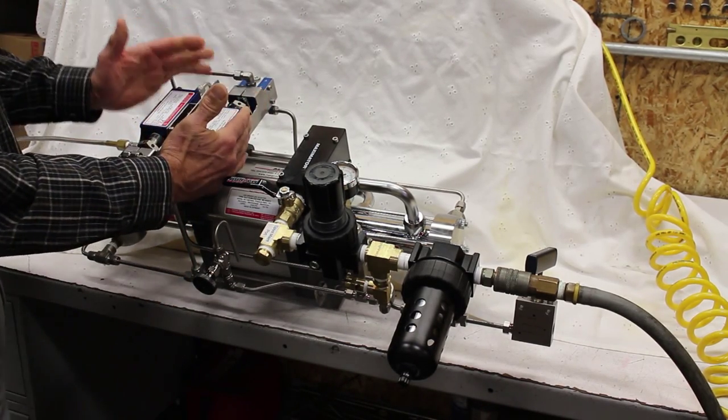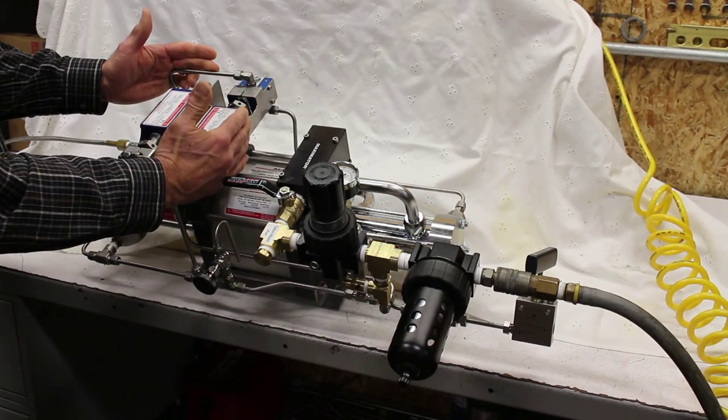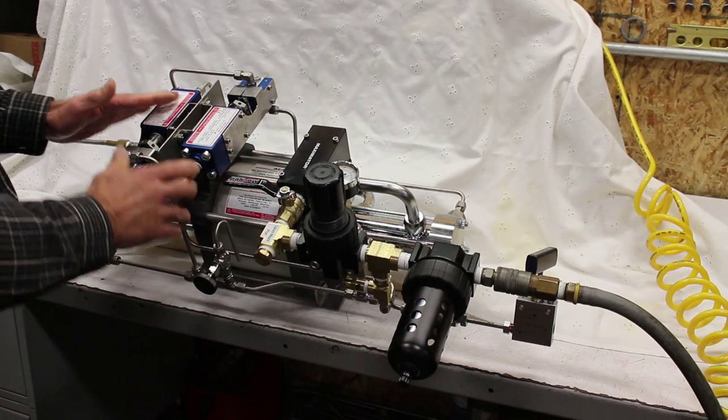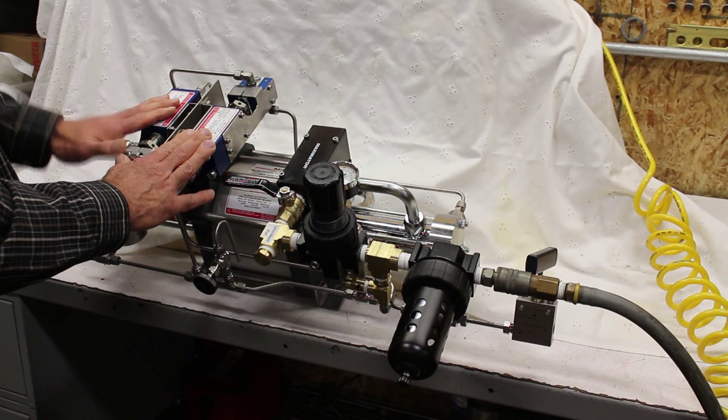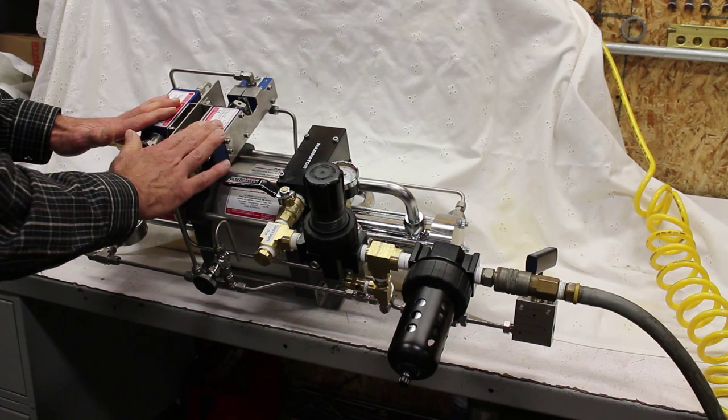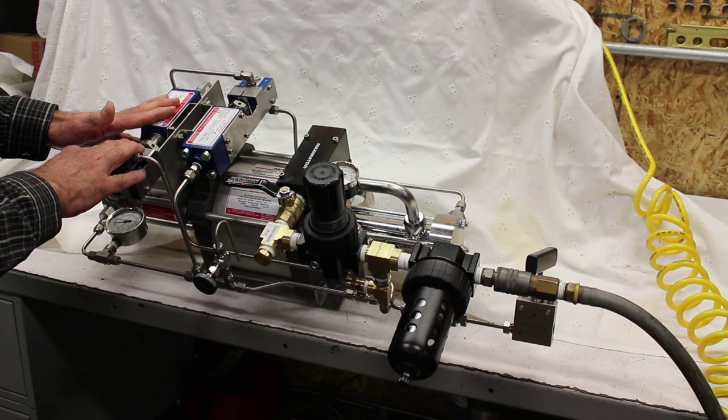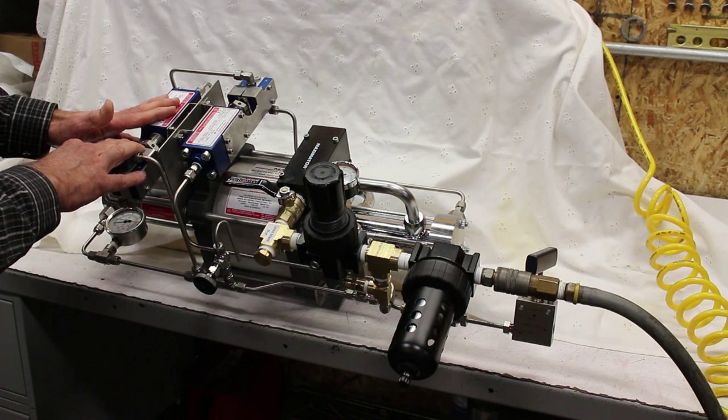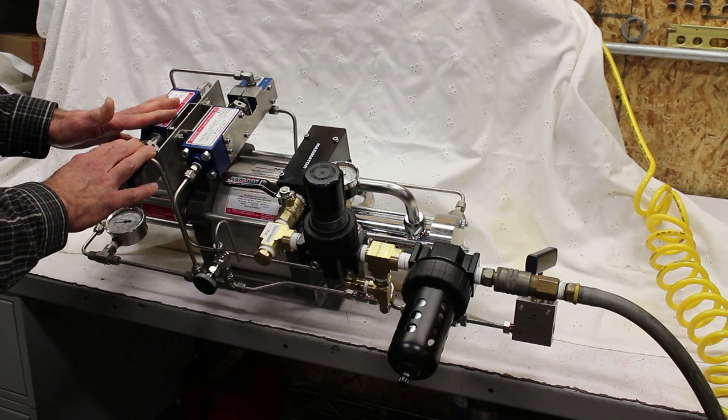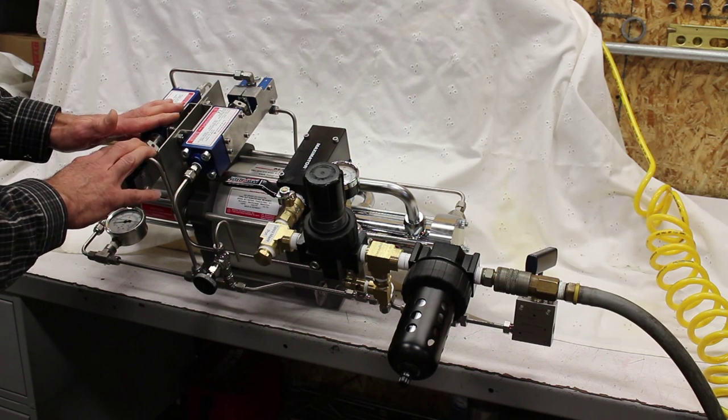And a little further, part of the control of this system are the air pilot switches. On this gas booster package, there happens to be two switches: an inlet air pilot switch and an outlet air pilot switch. The inlet switch requires a minimum of 150 psi in this case in order for the booster to operate. Otherwise, the booster will not run.